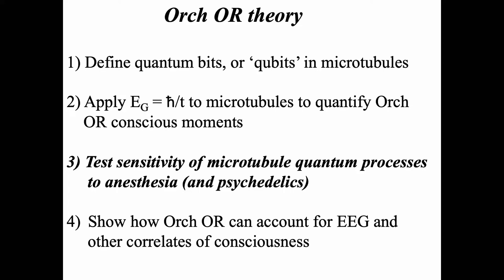We wanted to test sensitivity of microtubule quantum processes to anesthesia and psychedelics, and show how Orch OR can account for EEG. The easiest way to test a model of consciousness is: how does it respond to anesthesia? During the 19th century, a group of gases were discovered which, when inhaled at low concentrations, caused euphoria — the ether frolics, sniffing ether and getting giddy, and laughing gas nitrous oxide was very popular.